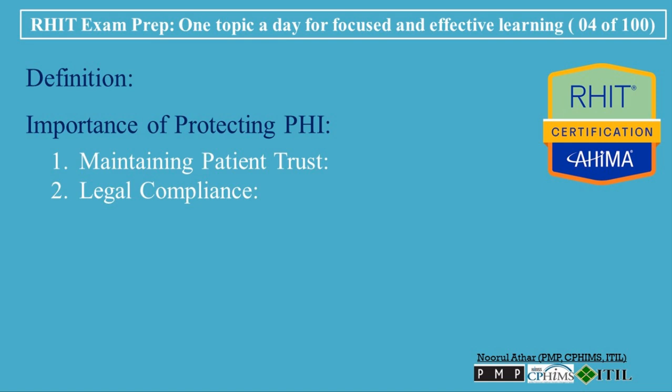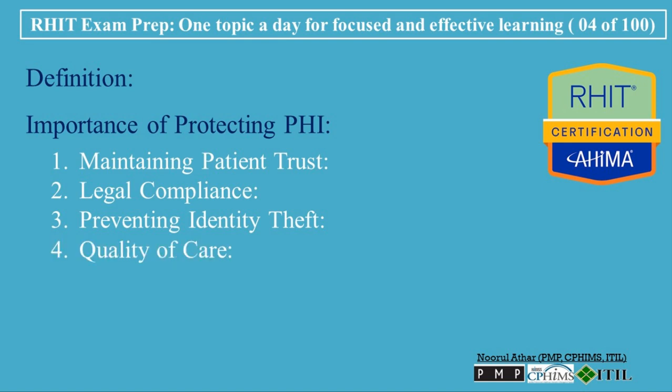Violations of HIPAA can result in both civil and criminal penalties. 3. Preventing Identity Theft: By protecting PHI, health care organizations reduce the risk of identity theft and fraud, which can have serious consequences for patients. 4. Quality of Care: When PHI is accurately documented and securely shared among health care providers, it leads to better informed treatment decisions and improved patient outcomes.